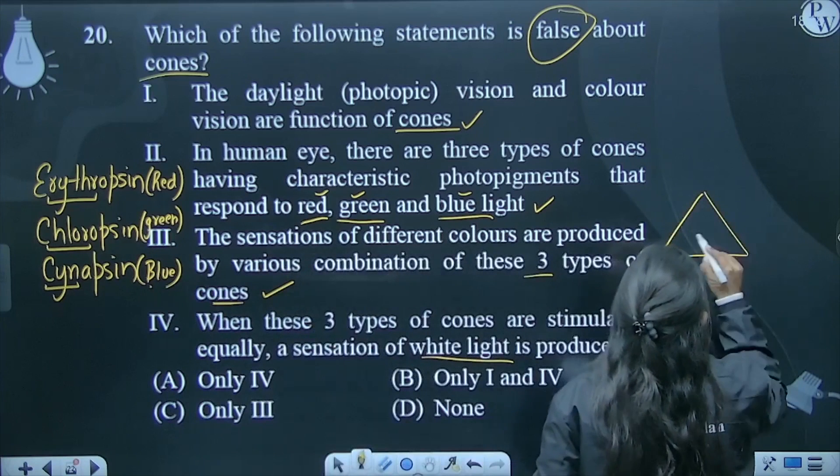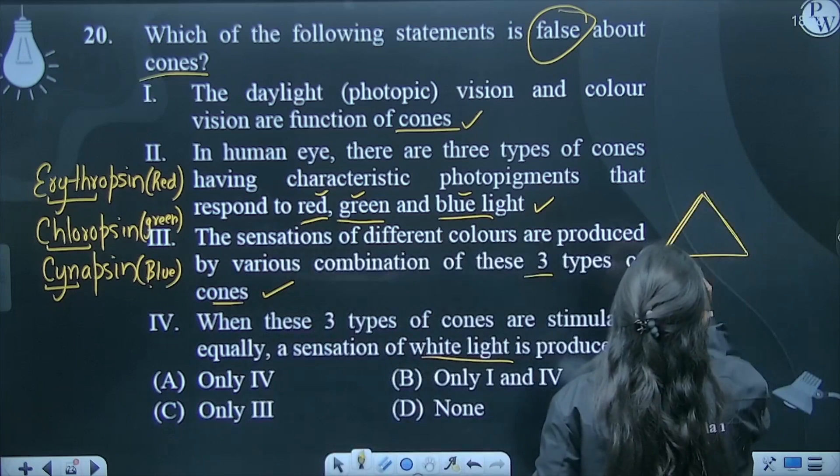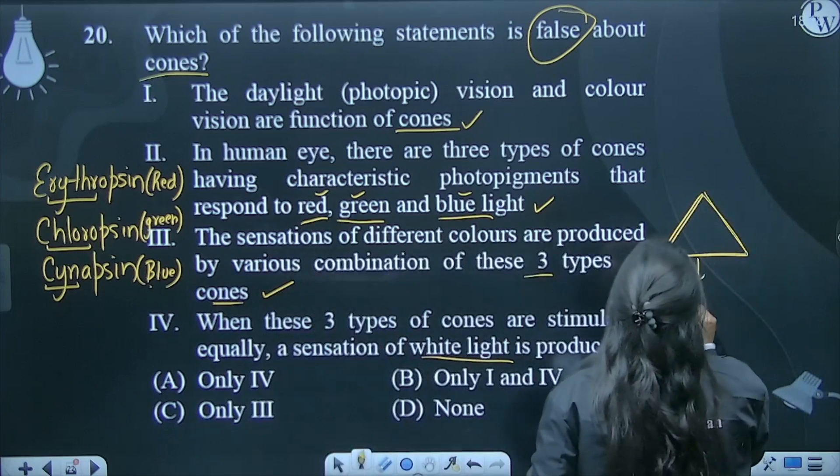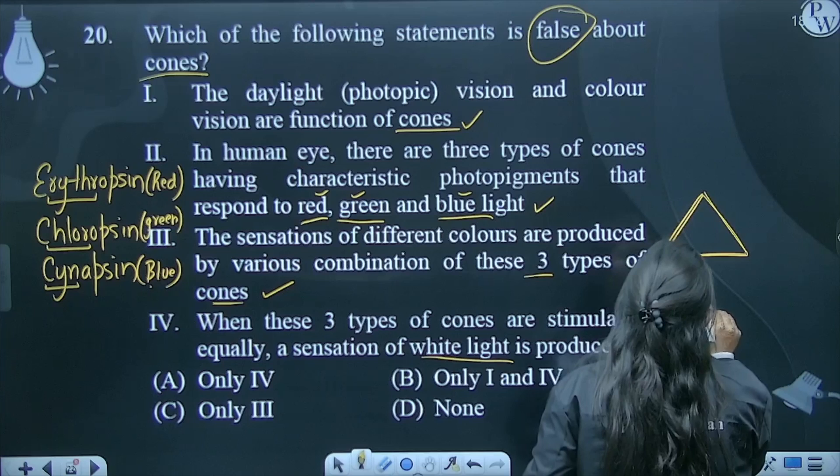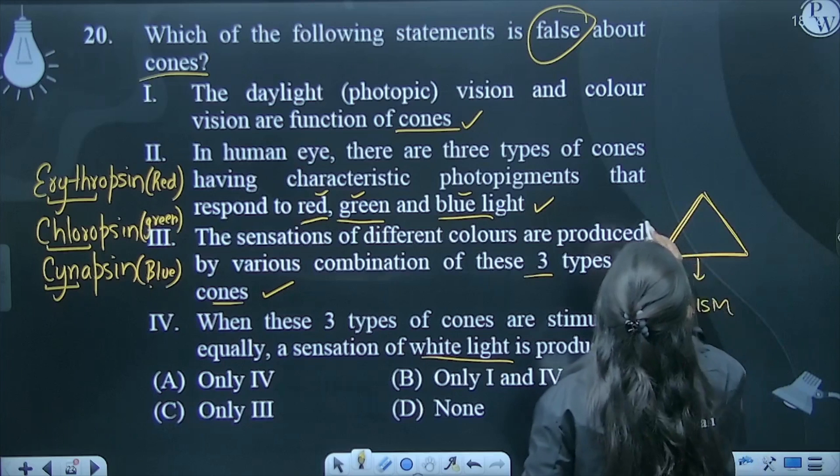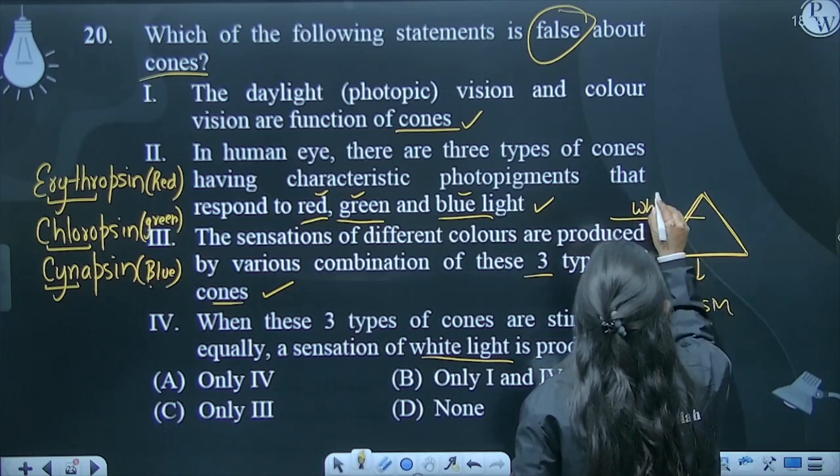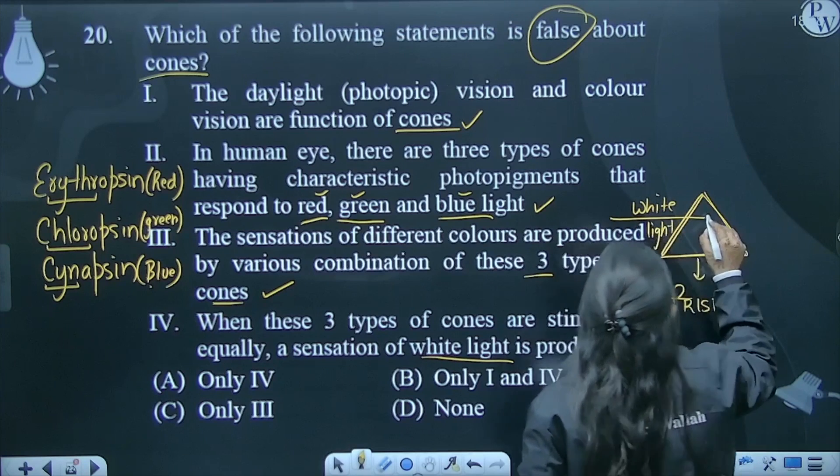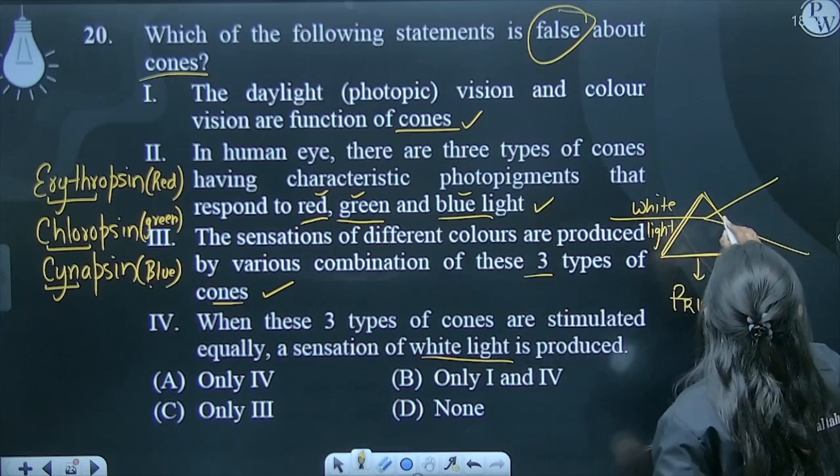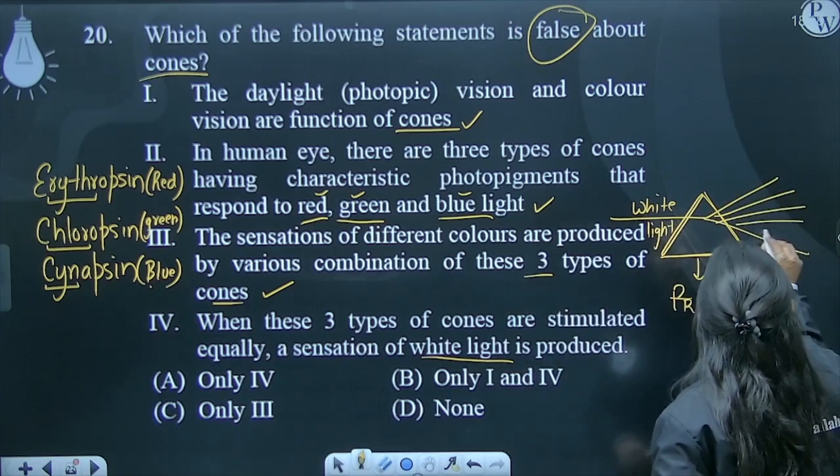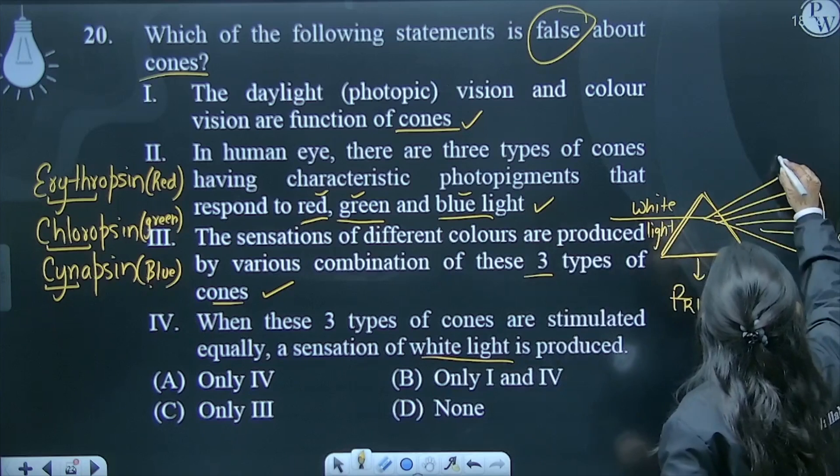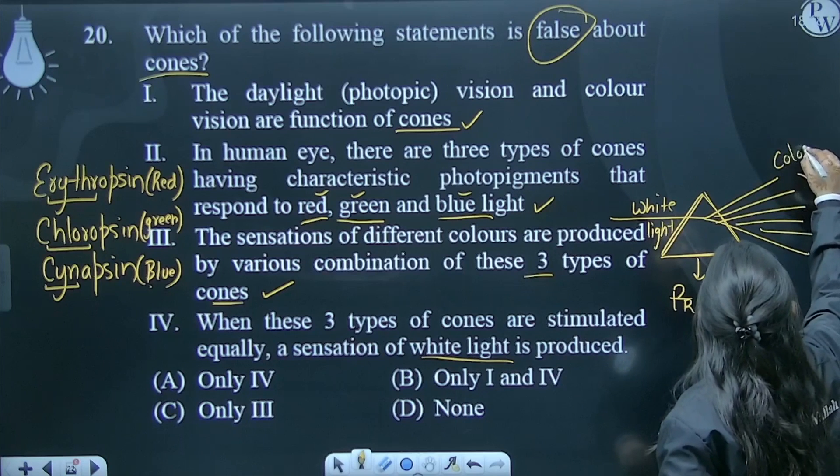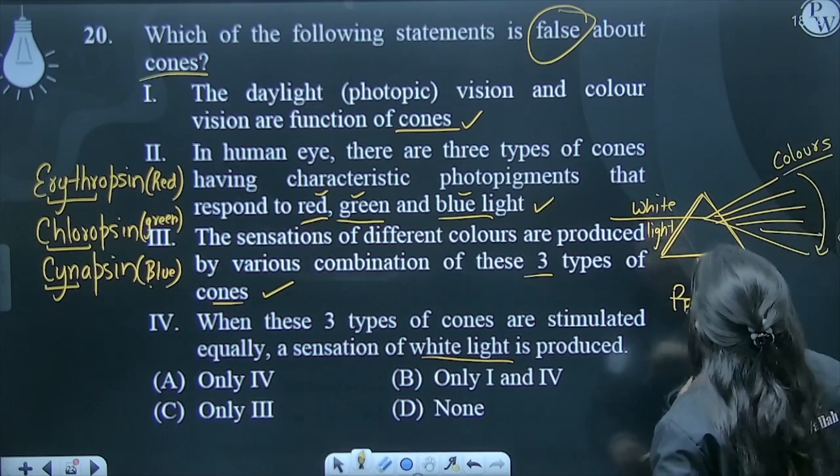This is a prism. Assume that it is a prism. You're learning physics. This is your white light. When white light comes to a prism, it produces color variations. These are your colors. So where are these colors?